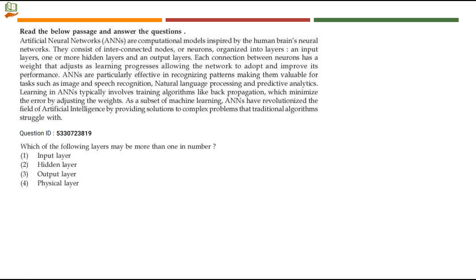Next question: which of the following layers may be more than one in number? Generally when you take a neural network there will be exactly one input layer and one output layer; in between you can have one or more hidden layers. So which can be more than one in number? Option number 2 — hidden layer — is the right answer. Physical layer doesn't belong to artificial neural networks.